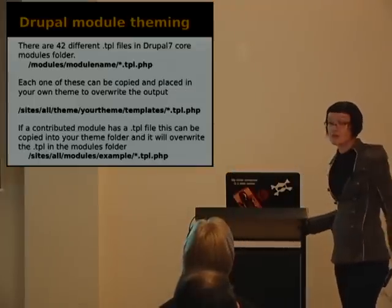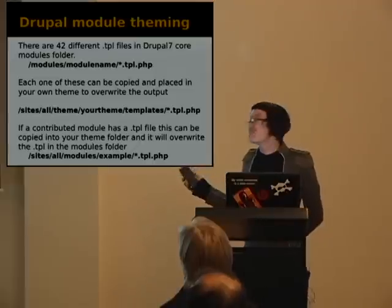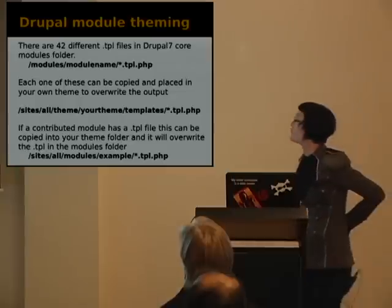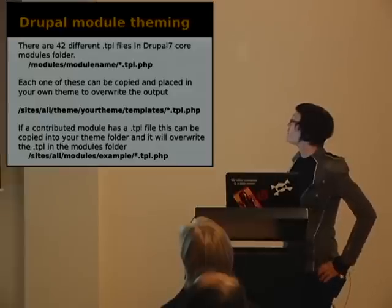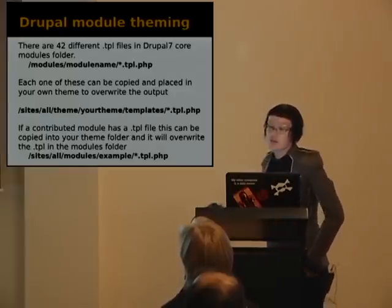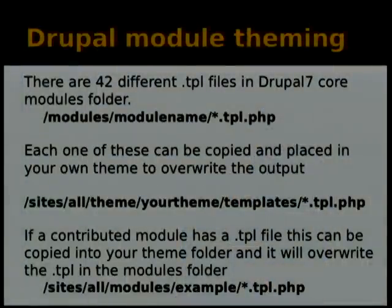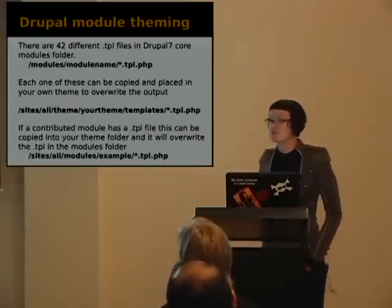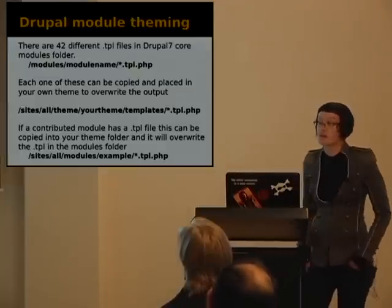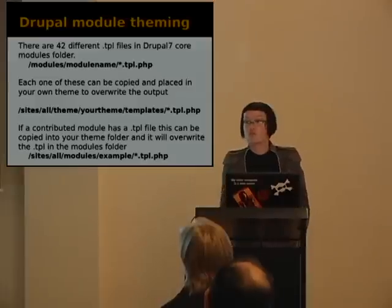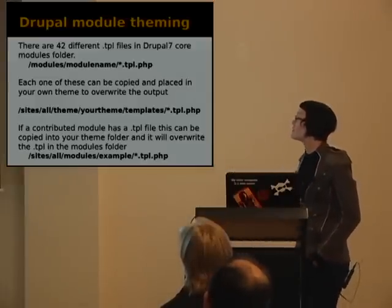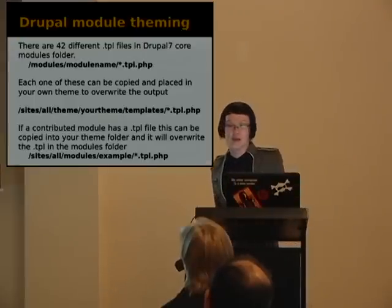There are 42 different TPL files in Drupal 7 core modules folder, and each one can be copied and placed in your own theme to overwrite the output. If a contributor module has a TPL file, copy it into your own theme folder and it will overwrite the TPL in the modules folder. Never edit the module itself — if core or contrib has something you want to use, copy it into your theme and do your overwriting there.